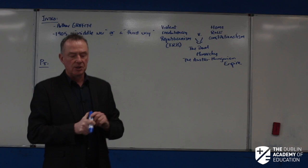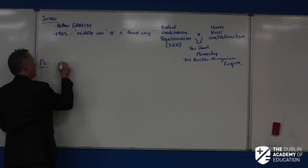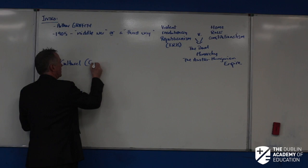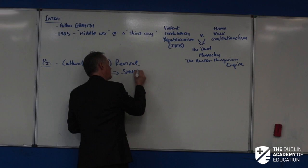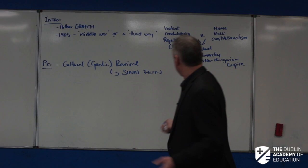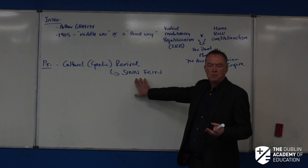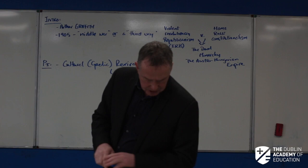Paragraph one develops Griffith's important ideas pre-1916. He chose an Irish name — Sinn Féin, 'ourselves alone' — a product of the Gaelic Revival. When he chose that name it became one of the most important names in Irish political thought in the last century.